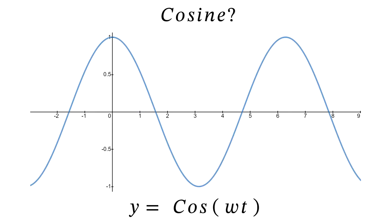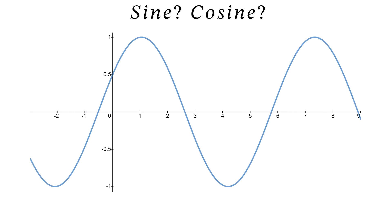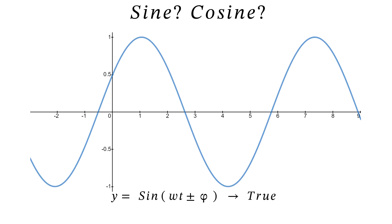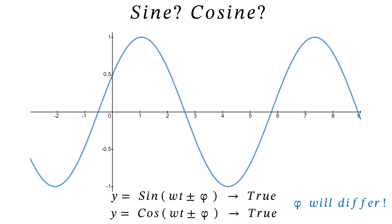A cosine wave starts at one and goes down, but it could be a leading sine wave that's leading by 90 degrees or pi over 2 radians. For a waveform starting at 0.5 and going up, it's neither purely one nor the other — it's both. It could be y equals sine(ωt + φ) or y equals cos(ωt + φ), and both are true but with different phase differences.